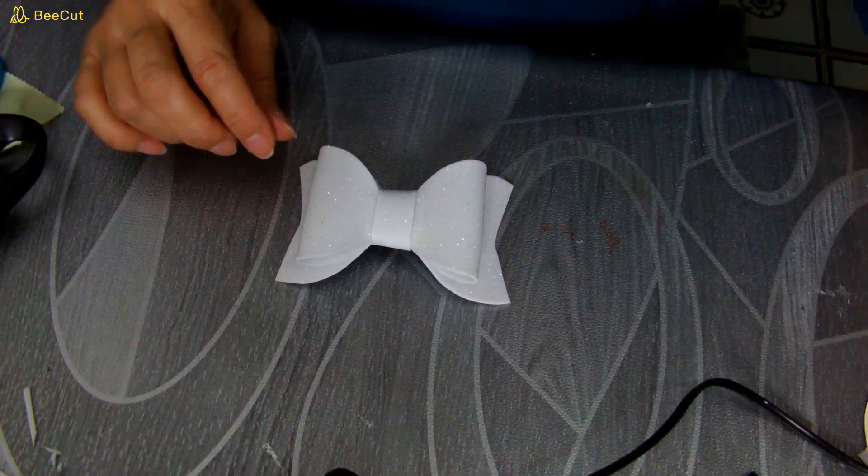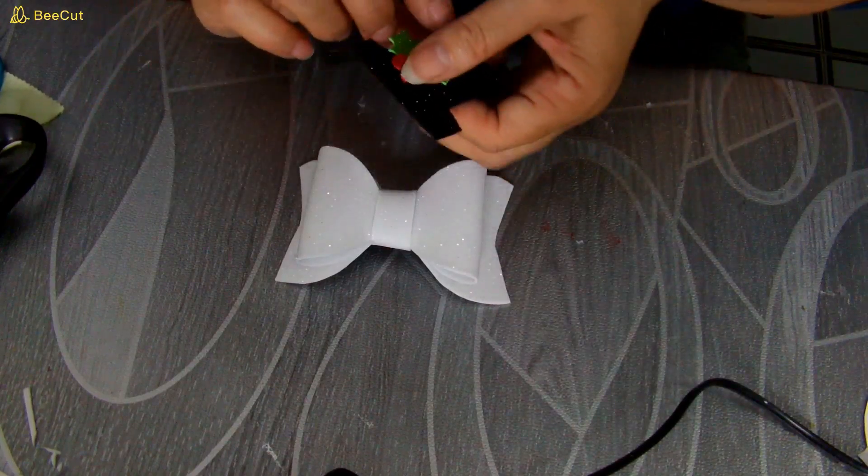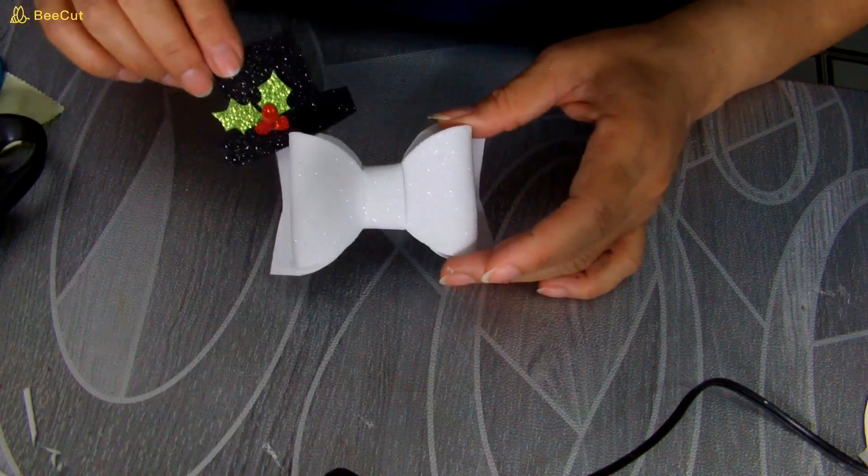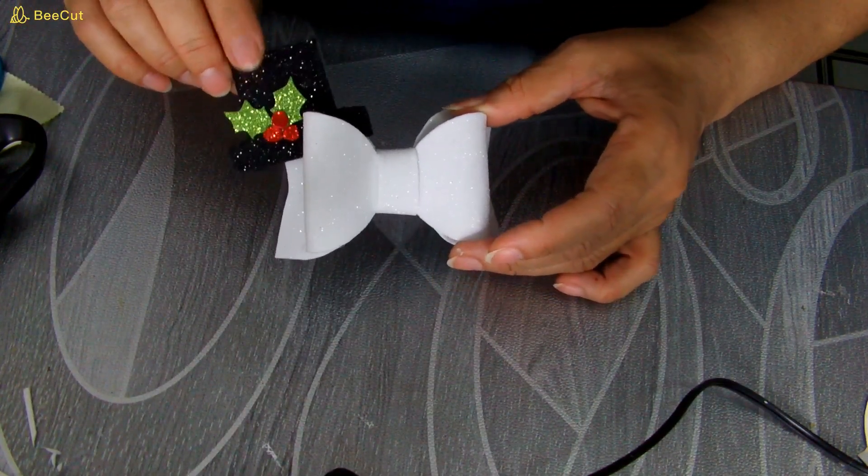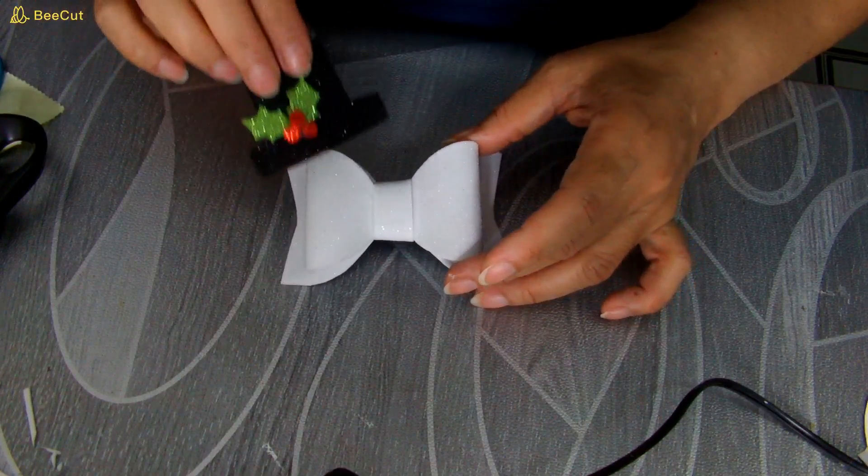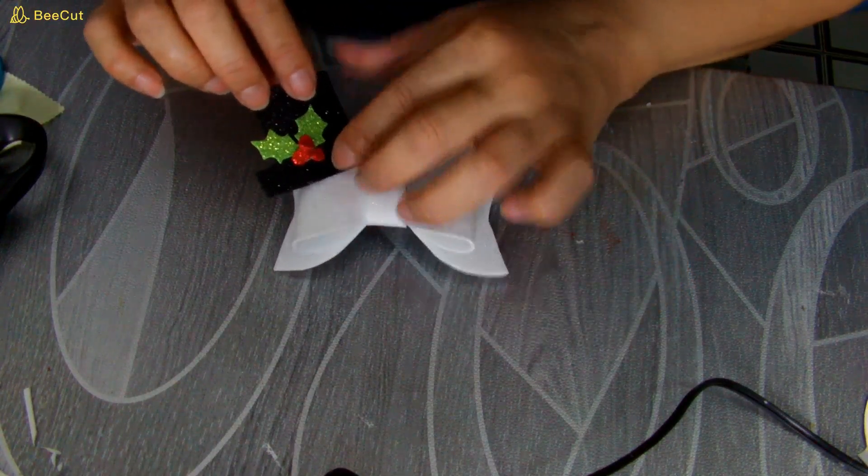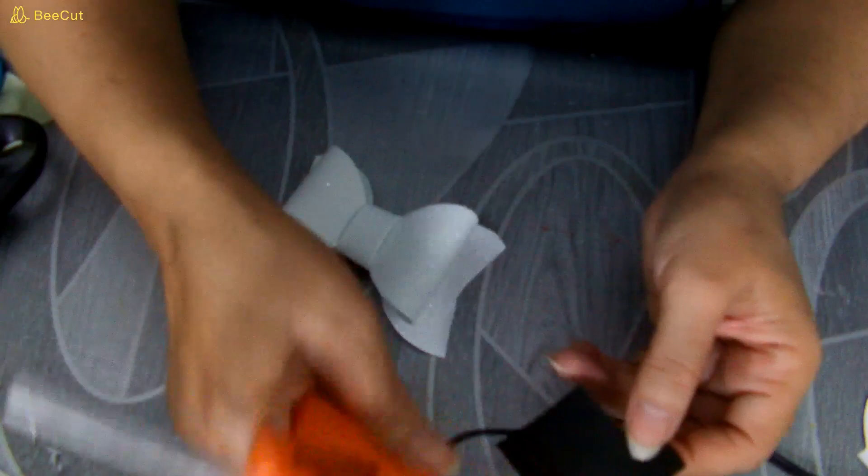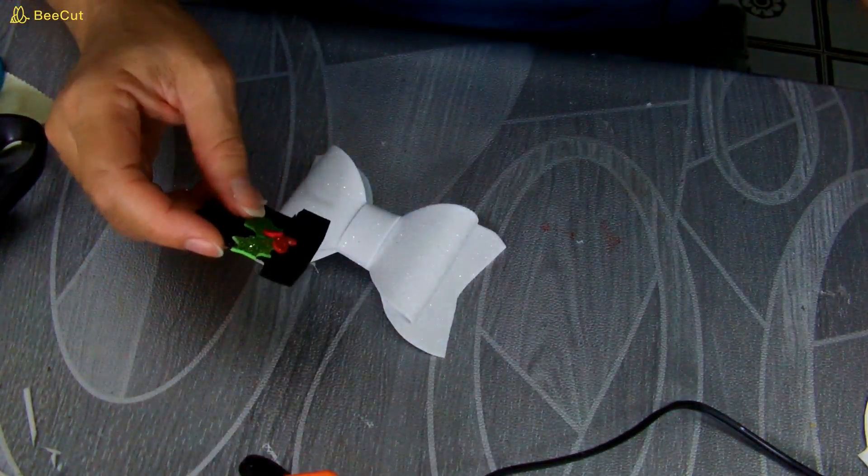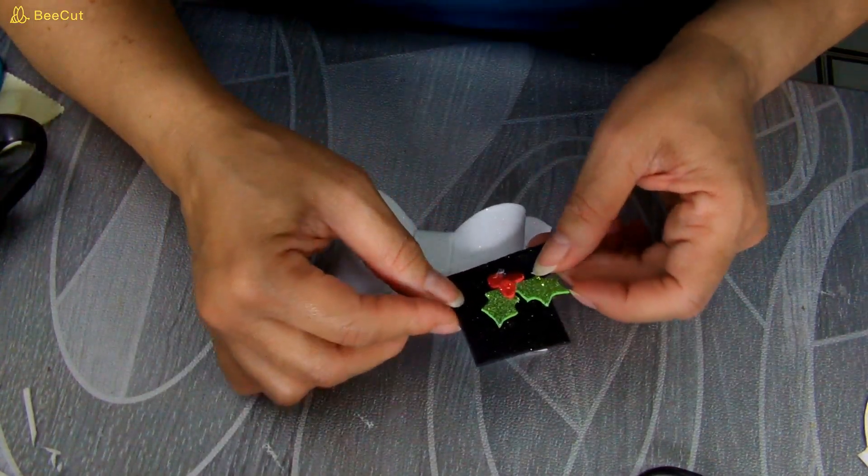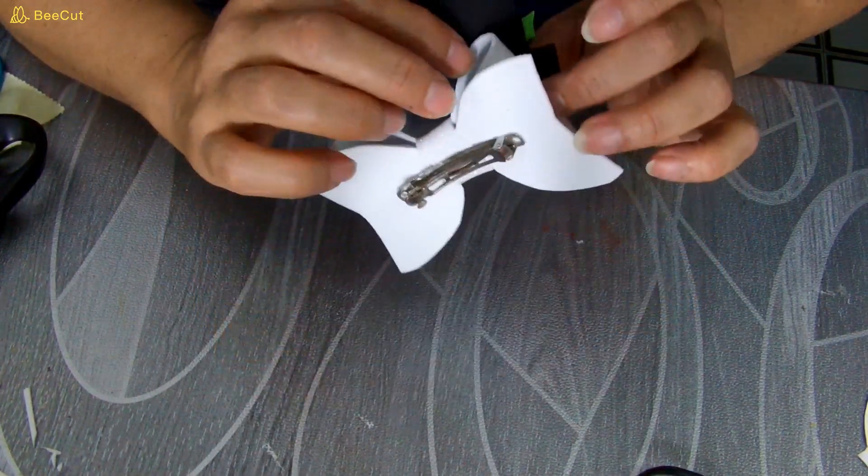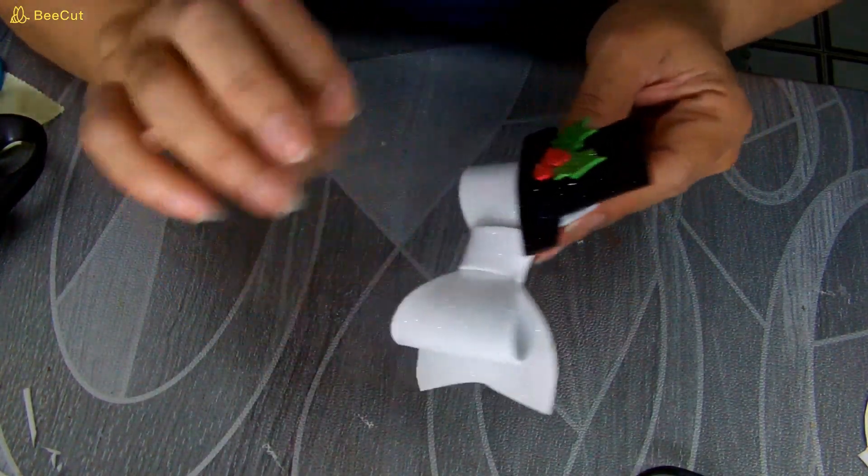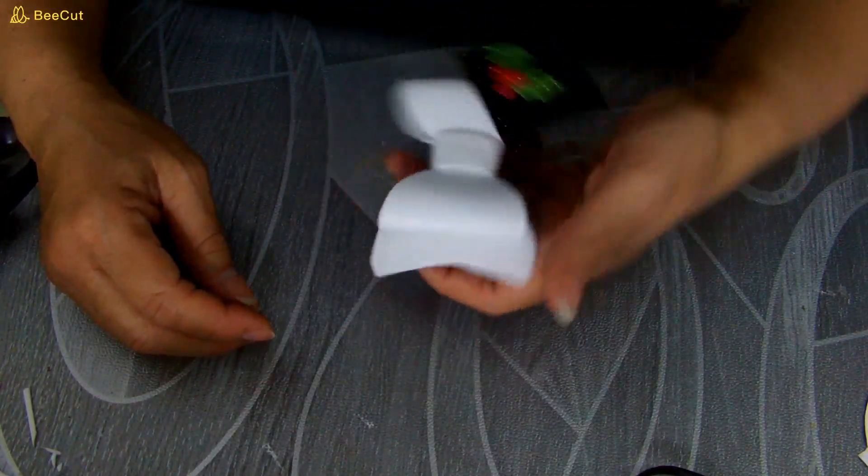Esto lo voy a decorar. Le voy a poner aquí acá ahí arribita el sombrero, o aquí detrás como a usted le guste. Vamos a ponerlo por aquí. Voy a poner un poquito de silicón. Y voy a pegar aquí. Y miren qué precioso lazo, qué bonito se ve.